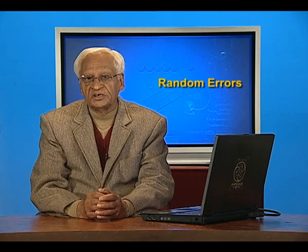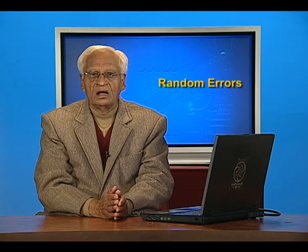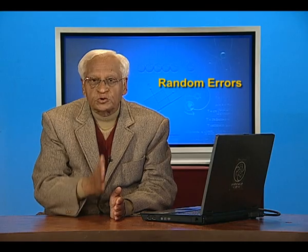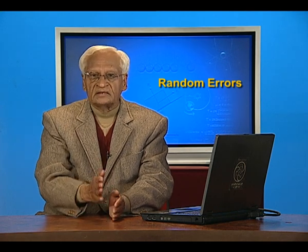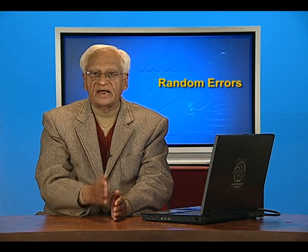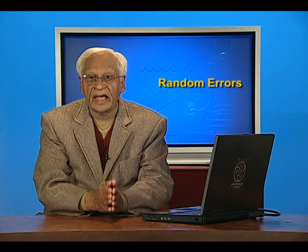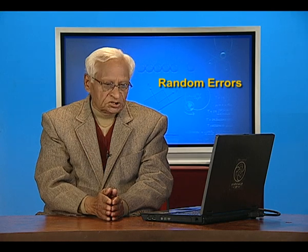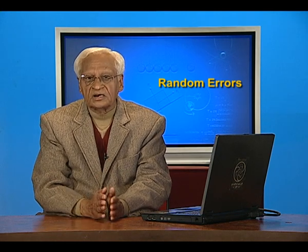You can easily see why the sum of deviations should be 0 — if you multiply n by a_mean, you get the sum of all observations. So the deviations may be positive or negative, and their sum is 0. However, the absolute value of the deviation is not 0. If the deviation is negative, we take its positive value; if it is positive, we keep it positive. So if the deviation is minus 0.1, we treat it as 0.1. The quantity by which a value differs from its mean — the absolute value of the deviation — is called absolute error.